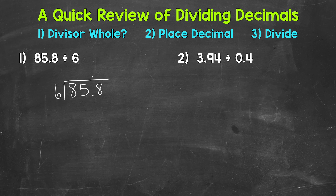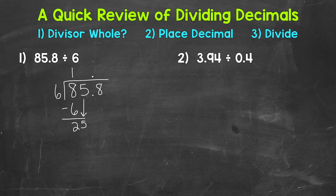For number 2, we'll see what happens when we do not have a whole number for our divisor. Once we bring that decimal straight up into our answer, we can divide as we normally would with whole numbers using the same process: divide, multiply, subtract, bring down, repeat. So we start with 8 divided by 6 — how many whole groups of 6 are in 8? Well, 1. Then we multiply: 1 times 6 is 6. Subtract: 8 minus 6 is 2. And then we bring down.